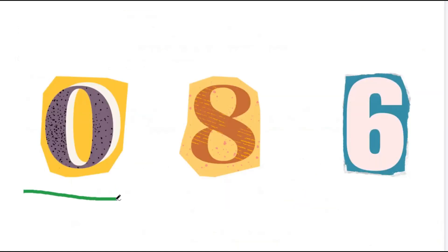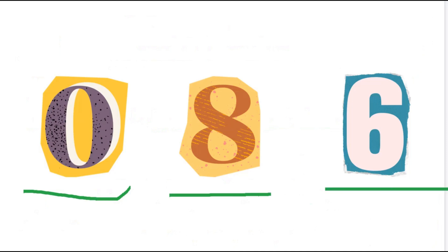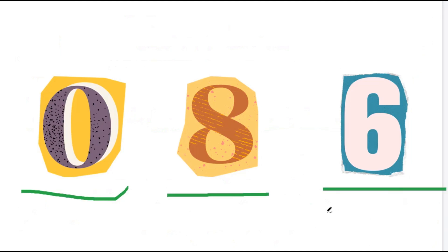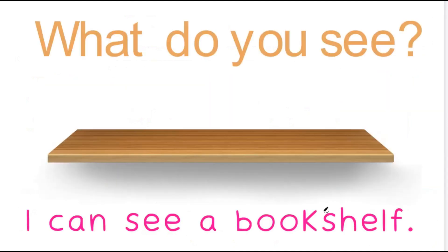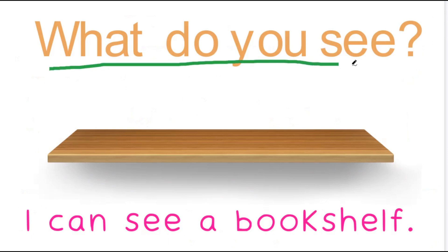What number do you see? This is number 0. This is the number 8. And this is the number 6. What do you see?